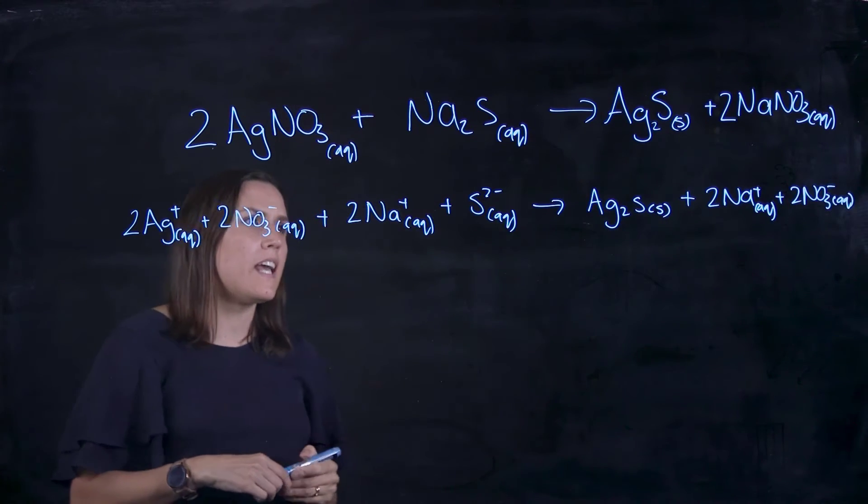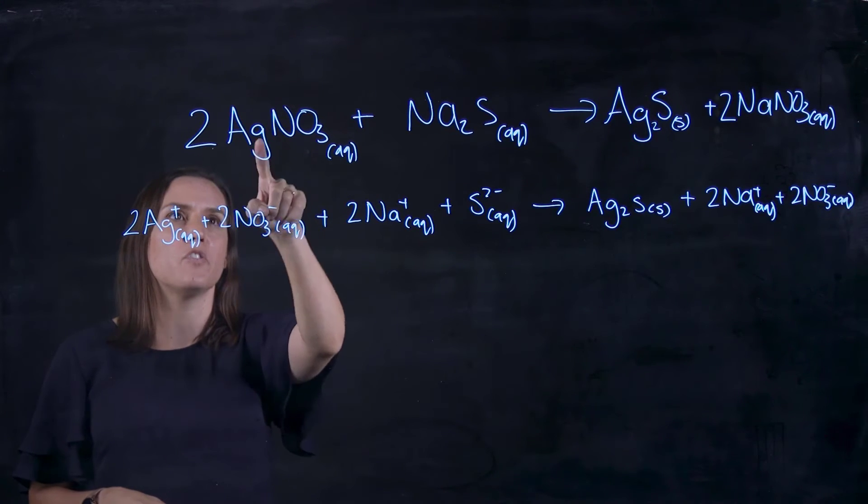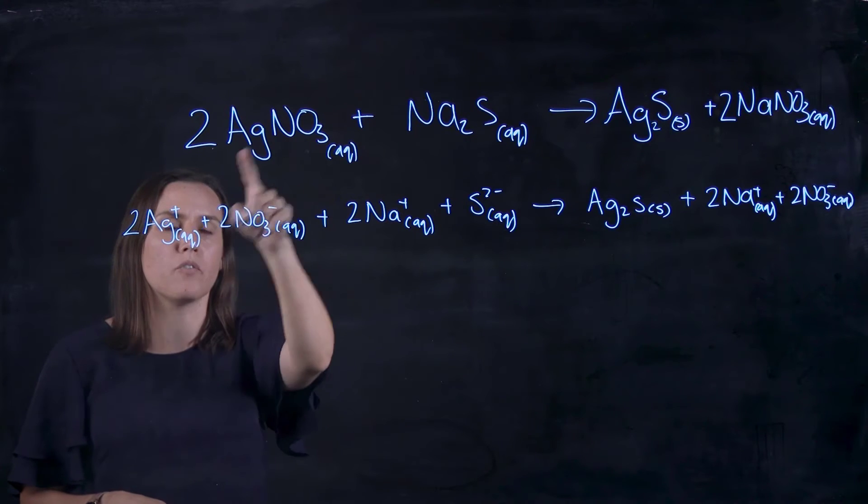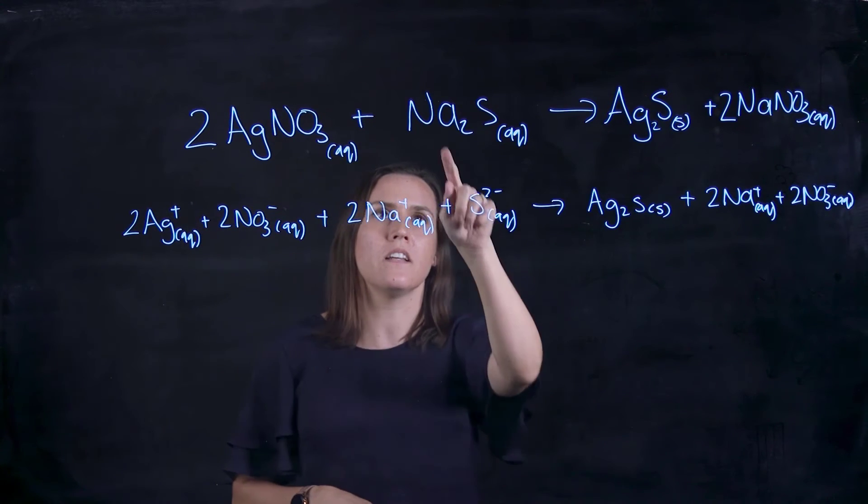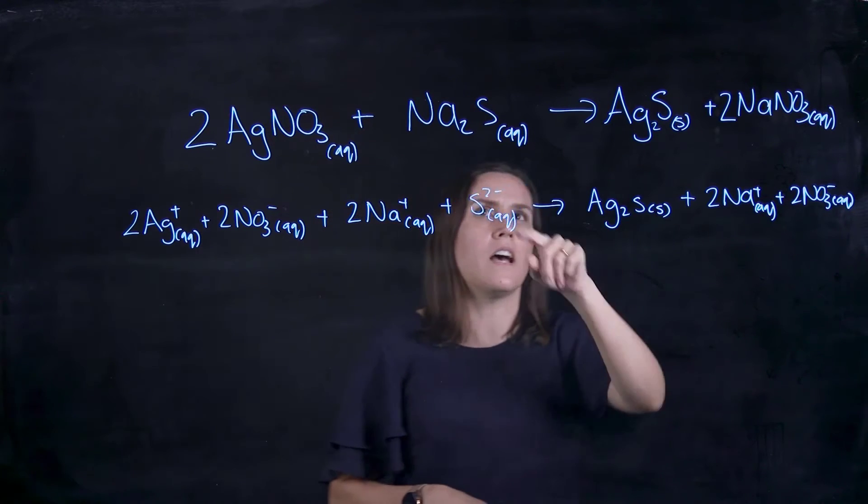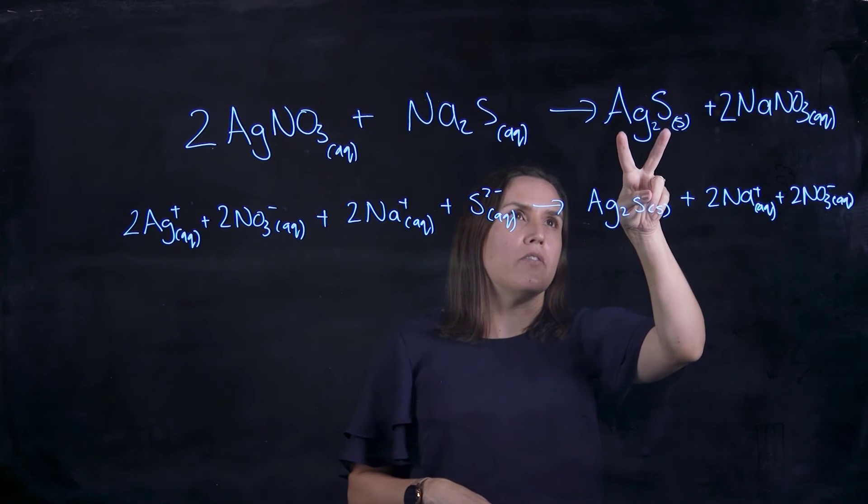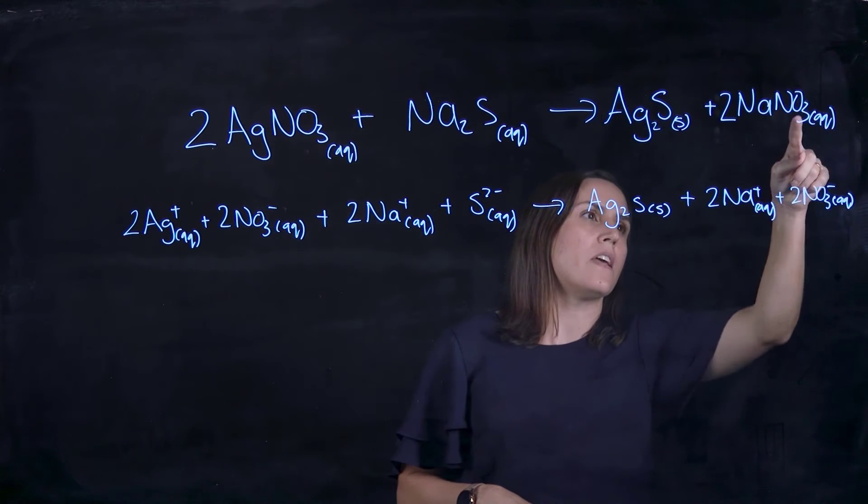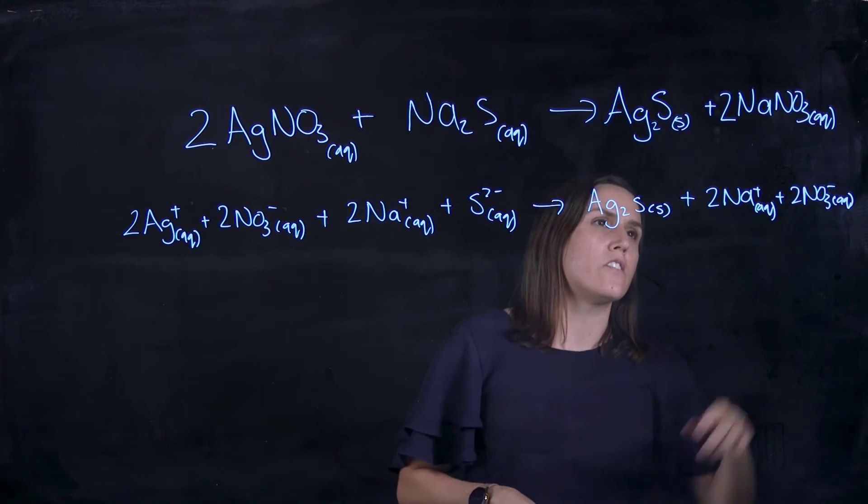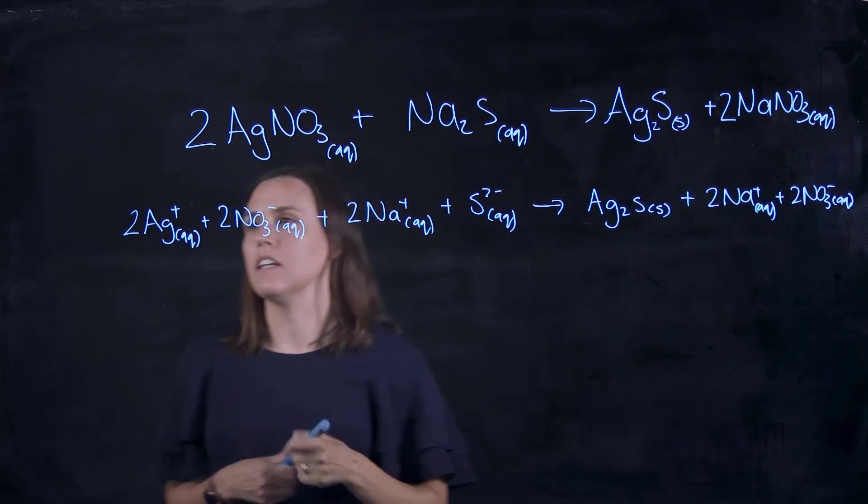You can see now I've split up the silver and the nitrate and we've got two of each one of those, so I've carried through the twos out the front to keep everything balanced. Two sodiums, one sulfide, then I've got my silver sulfide that I've kept because that's a solid, and then I've got sodium and the nitrate, carrying down the two as well. So this is my complete ionic.